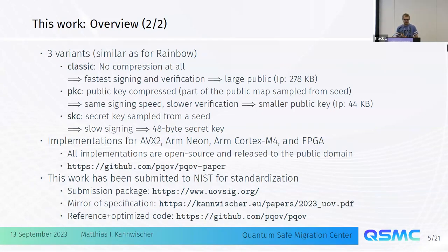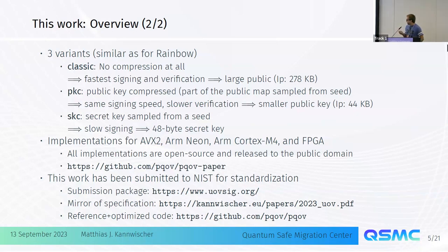There's a website where you can look at the specification, which is essentially what is described in our paper. We have another repository for the submission code, because we did some experiments in the paper comparing different approaches — we threw those out and only took the best approaches for the NIST submission. That's why there are two repositories.